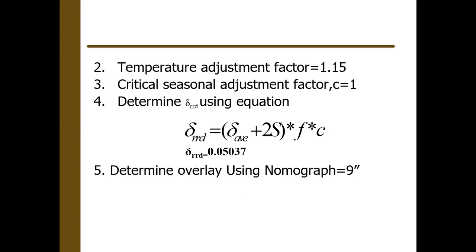Once you do that, we take the temperature adjustment factor S is 1.15 from the graph, and if we don't have any seasonal graph available in the area, it's recommended to take C is equal to 1. So doing this, we will find delta RRT is 0.05037 inches. Then, once you know that, you can always find overlay using this graph given in the next slide.